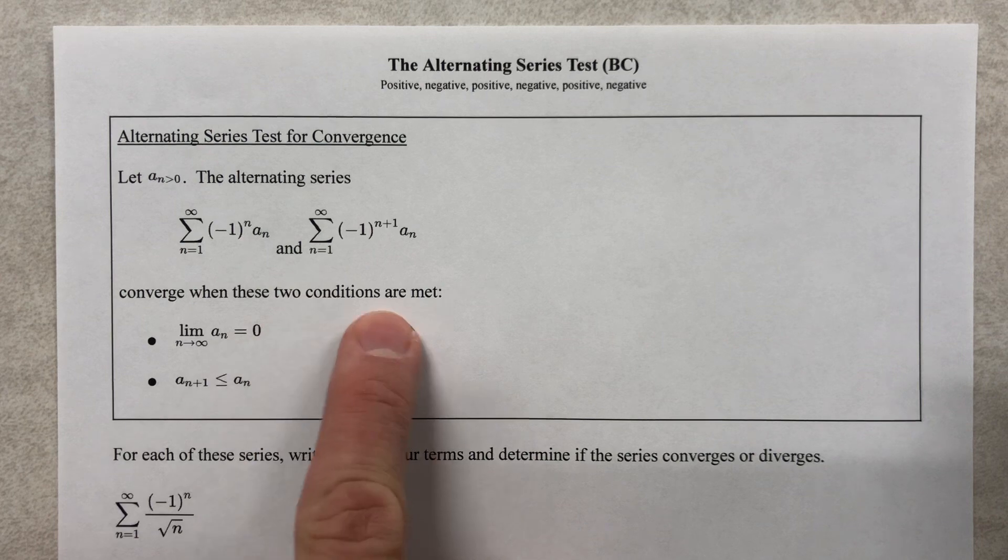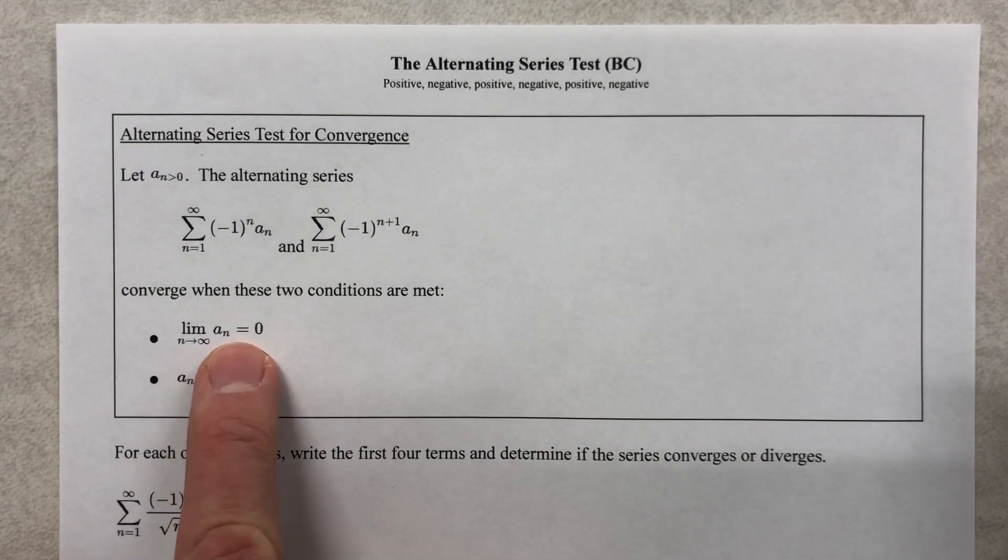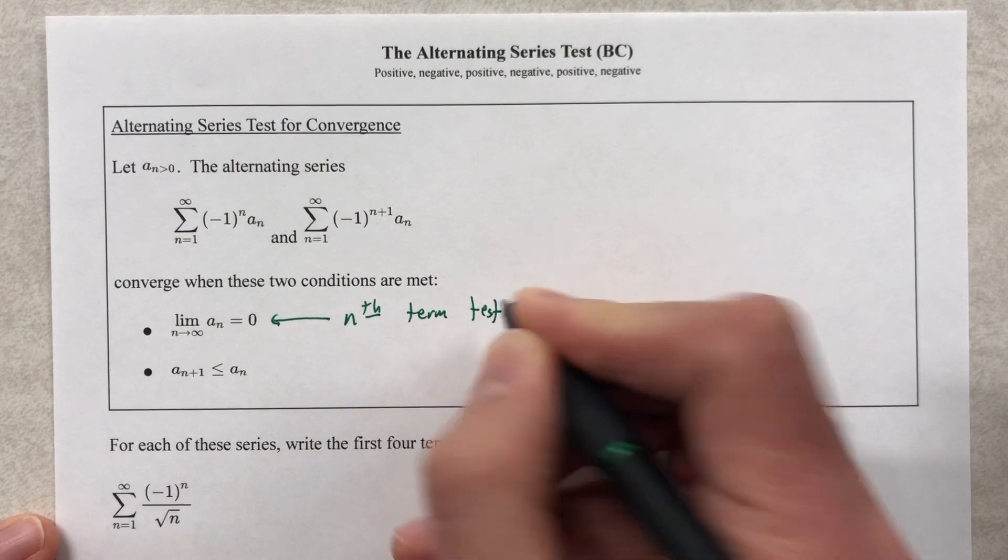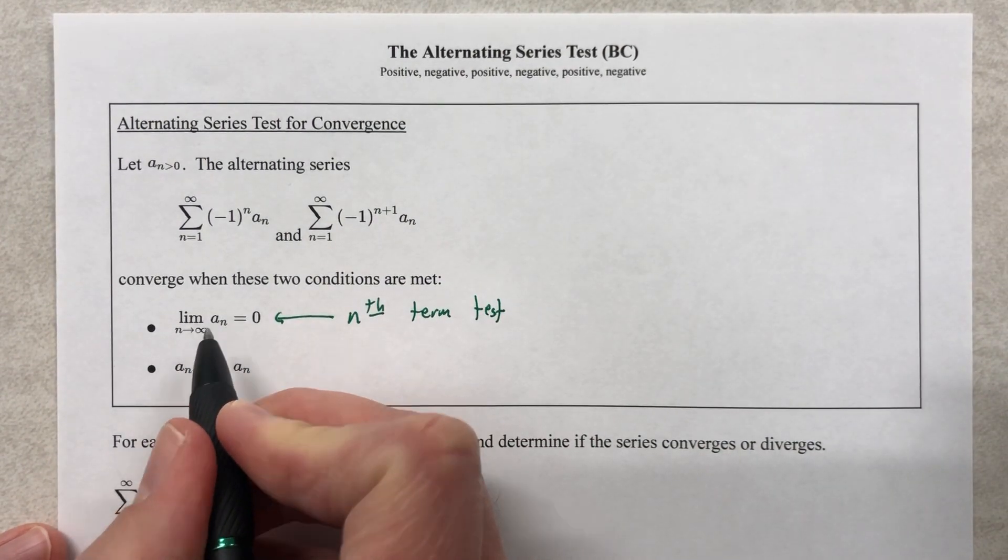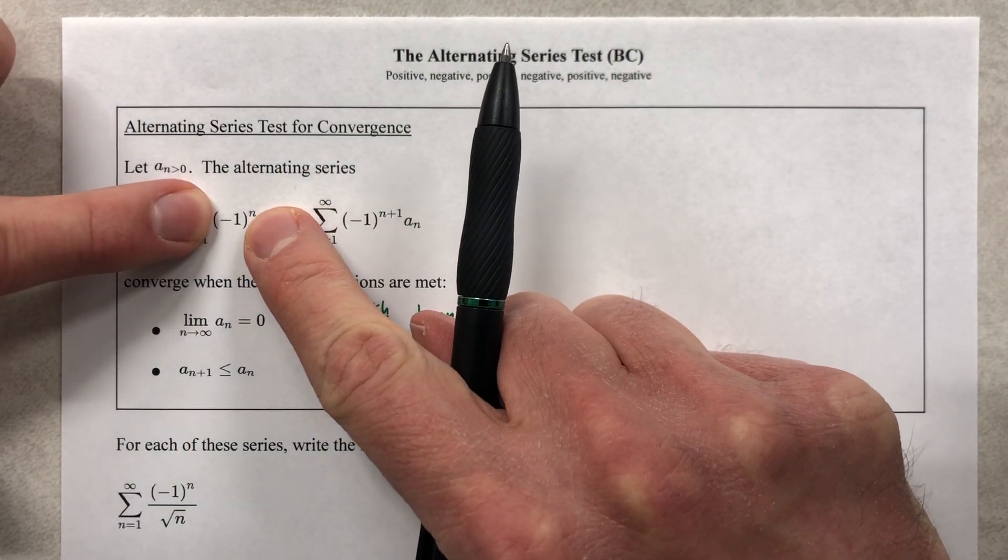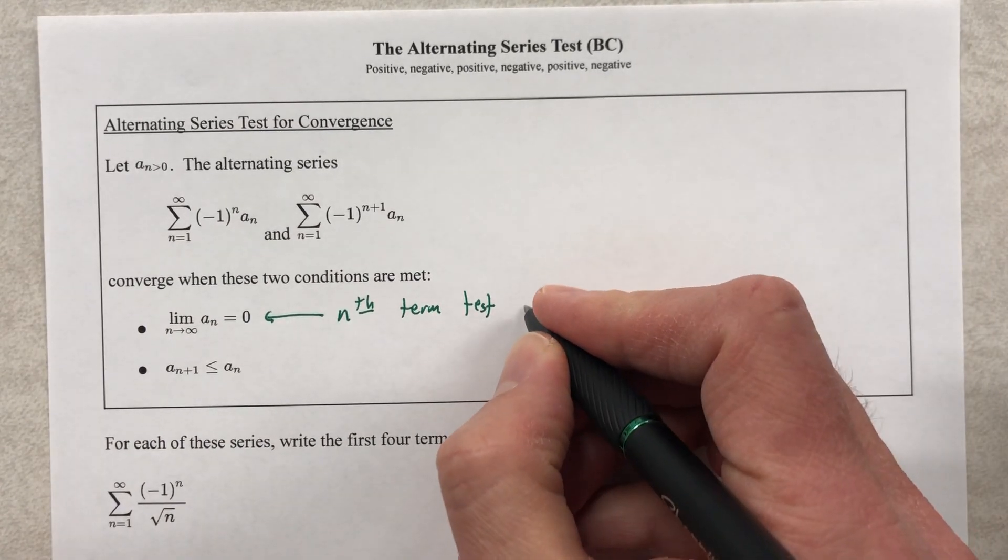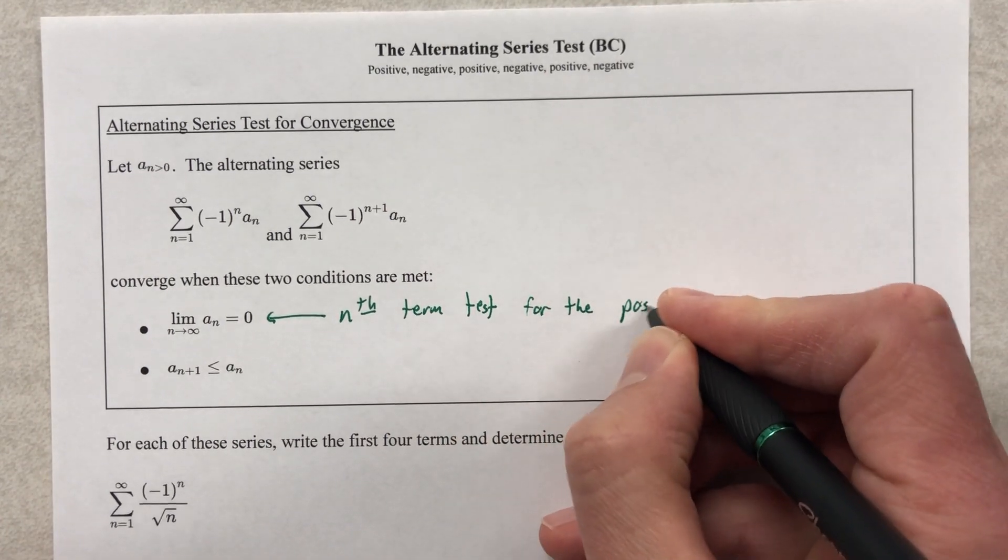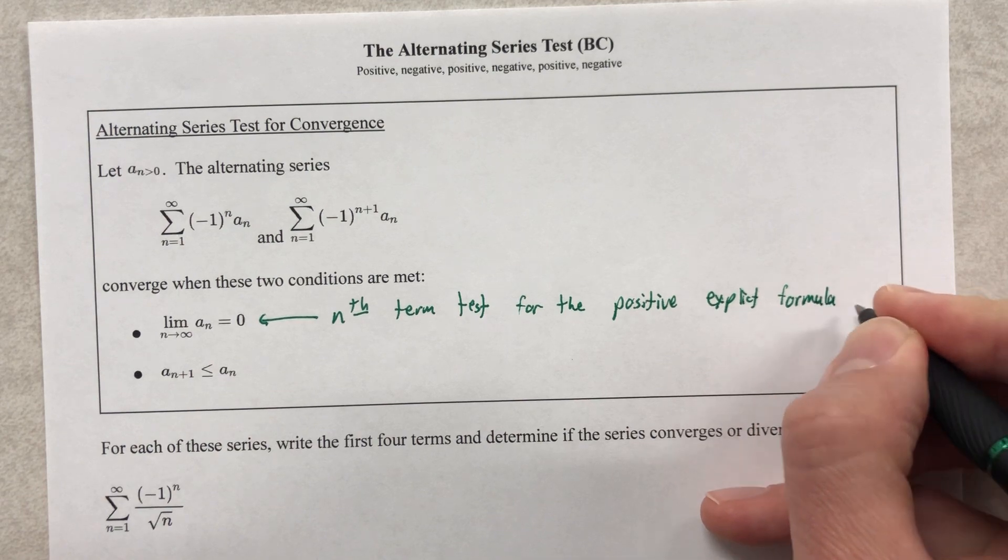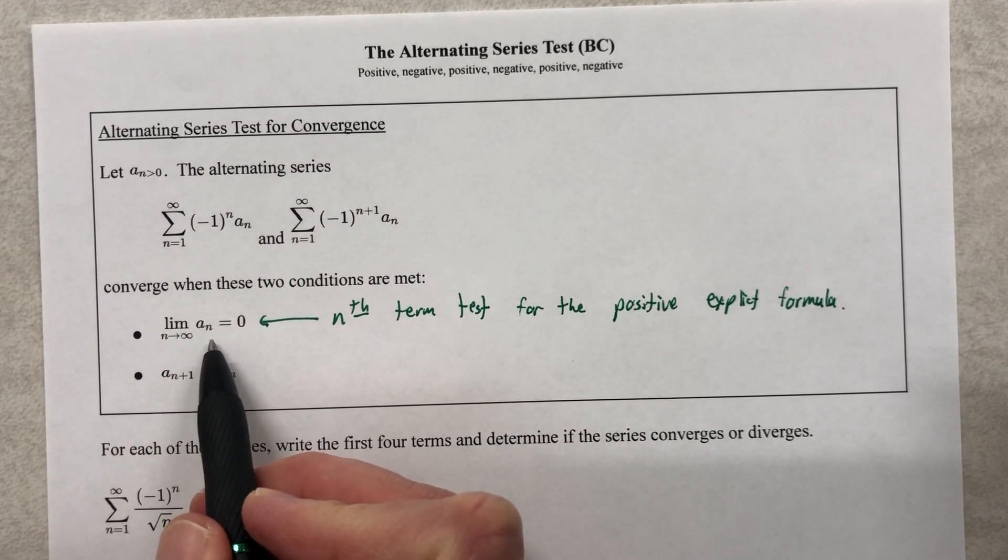So they're going to converge when these two conditions are met. The alternating series will converge when I have met two conditions. Condition number one, this is the nth term test. That's what this really is, nth term test. But it's only for the a sub n, which is the positive aspect of it, not what I call, and this is not a textbook definition, but the toggle factor.